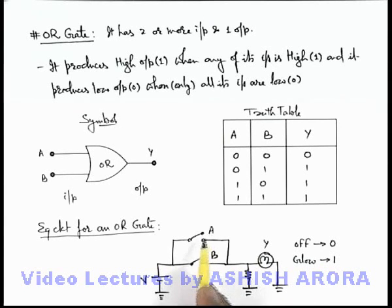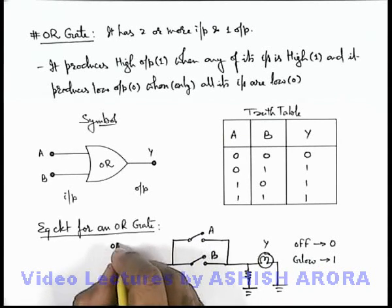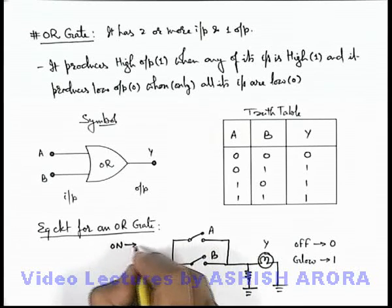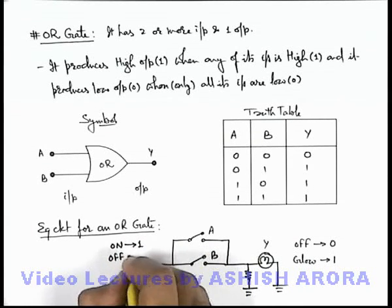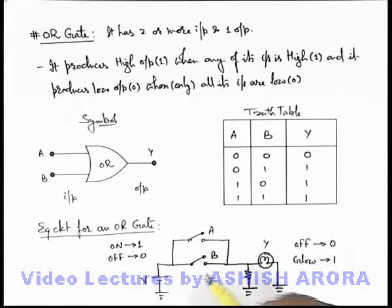Here we can say if any of the switches is kept in on condition, where on condition of the switch can be considered as state 1 and off condition can be considered as state 0, so if both are off, the bulb is also off. If either of these 2 are switched on, you can see through that switch, as the 2 are connected in parallel, current will flow and the bulb will start glowing.